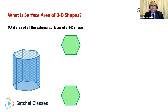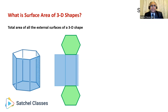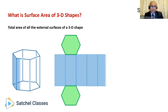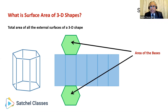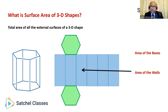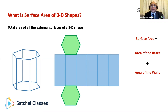In this specific case, because it's a hexagonal prism, it has six rectangular walls, as you can see. We're just opening up the walls — there are six of them. So the surface area of this particular prism would be the area of the two bases added to the area of all the six walls. That's what surface area is — the area of the surface of a 3D shape, always the external surface.